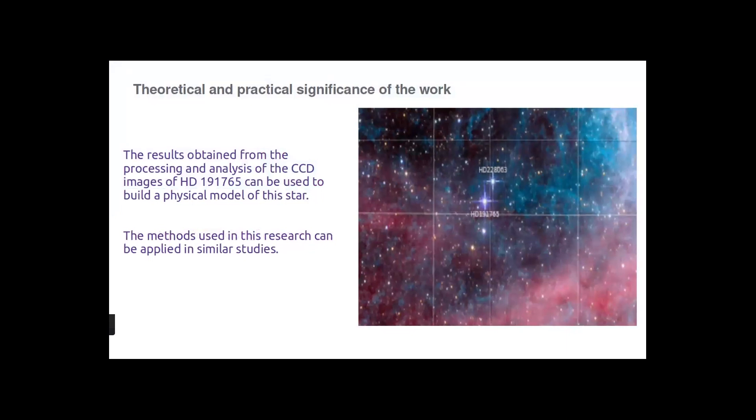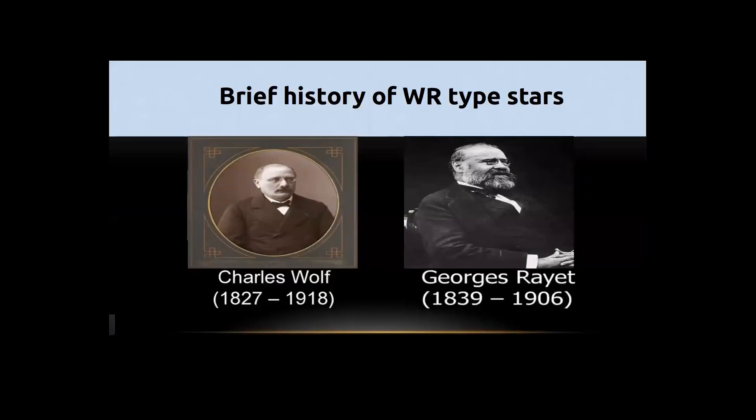The results obtained from processing and analyzing CCD images can be used when building a physical model of this star. The methods we use can be applied in similar studies. These results are relevant for understanding the physical processes in closed binary star systems and for theoretical research.